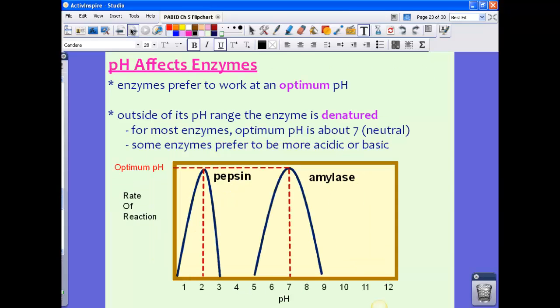Now pH also affects enzymes, sort of in the same way that temperature does. Now enzymes prefer to work at an optimum pH, just like an optimum temperature. It has a very specific pH that it likes to work at, and that it works best at. So outside of its pH range, the enzyme is denatured. It is not going to work at all.